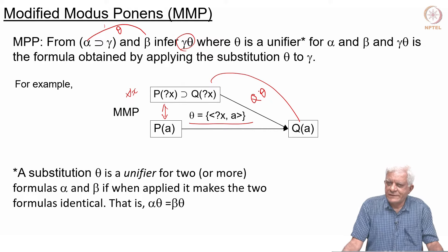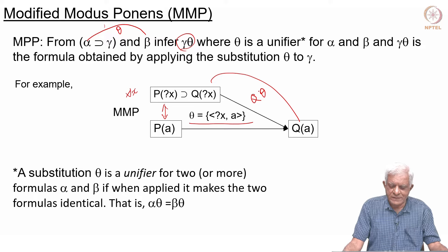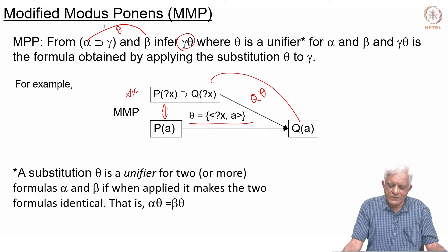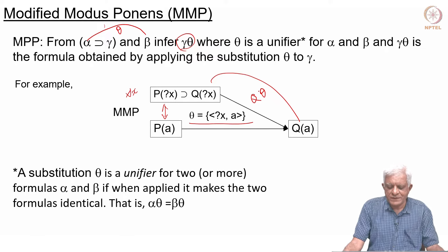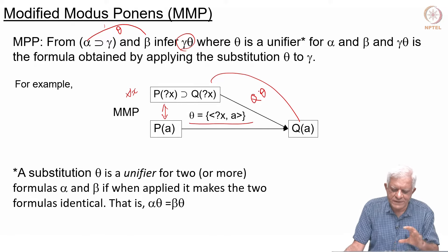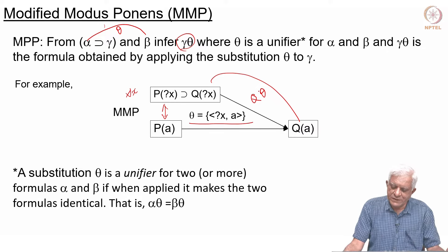We are back and we were looking at this modified modus ponens rule, which works with first-order formulas in the implicit quantified notation and is a one-step process. Earlier we said first you have to do universal instantiation, then you can do modus ponens. Now we are saying in one step you can do this modified modus ponens, which has built inside it a substitution — you are allowed to substitute variables with some values. This will also solve the problem of the guesswork as to what should you instantiate x to, because we know that you are going to match it with p of a. We simply say that we want a unifier for p of x and p of a, and we go forward and infer q, except that in q also we will have to apply the substitution, which is x with a, so we get q of a.